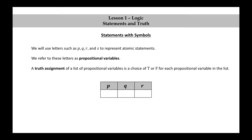Let's look at some examples of truth assignments when we have three propositional variables: P, Q, and R. One example of a truth assignment would be to set each of these three variables equal to T. Another example would be to set P and Q equal to T and to set R equal to F.